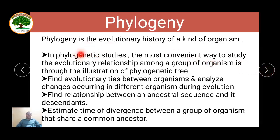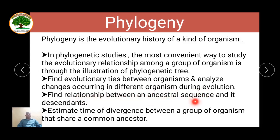Phylogenetic analysis is the evolutionary history of a particular organism in which we study the relationship between its ancestors and the present-day species and how they have evolved over time. It is a convenient way of showing the relationship among a group of organisms through illustration, called a phylogenetic tree. Here the differences and common features present in the organisms acquired over evolution are shown, and it also finds the relationship between ancestral sequences present in the DNA or protein and their descendants.